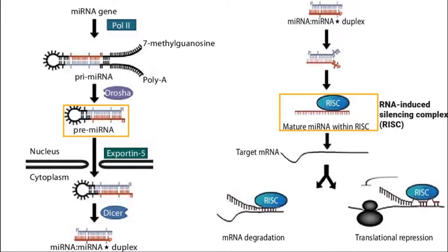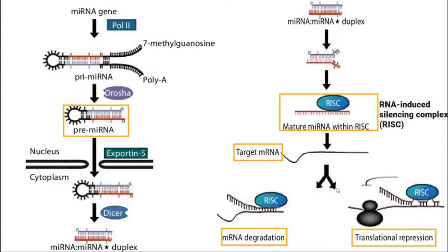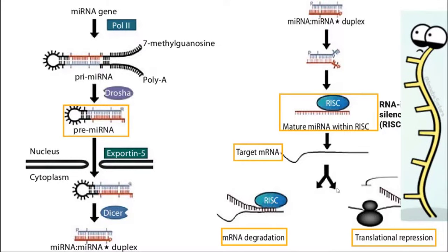Now it is active. What it's going to do is target mRNA, as you can see here. It has two different options: one option is that it will degrade the messenger RNA, or the other option is that it will repress the translation process. In both situations, the mRNA cannot perform its function — that's how we can silence the gene.